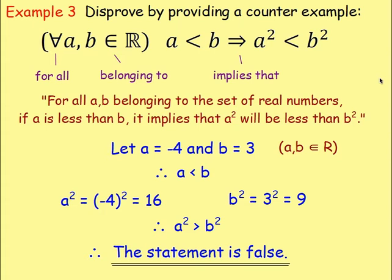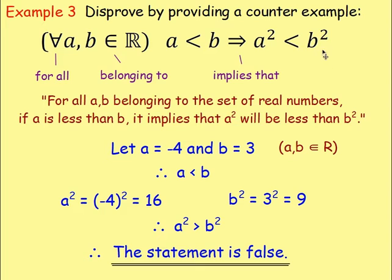Something more likely to come up in an exam would be this slightly trickier example. Disprove by providing a counterexample: for all a, b belonging to the set of real numbers, if a is less than b, it implies that a squared will be less than b squared. A lot of the time with proof by counterexample, negatives are going to be involved. Here I choose a = −4 and b = 3, so a is less than b. Squaring each: (−4)² = 16 and 3² = 9. Since 16 is bigger than 9, a squared is bigger than b squared, which disproves the statement.